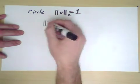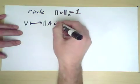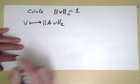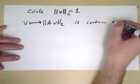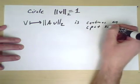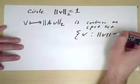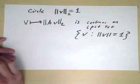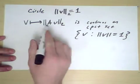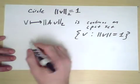So that means that v, going to the length of A v, is continuous on the compact set v, such that the length of v is 1, which means that this quantity of course obtains its maximum value in the compact set.